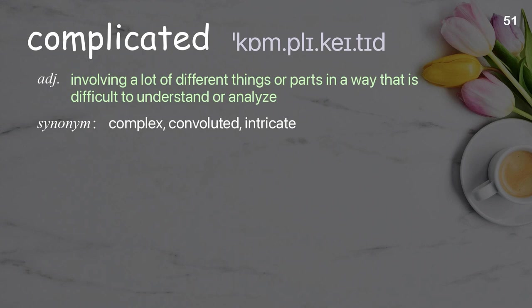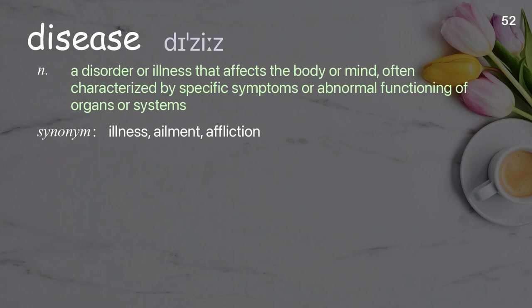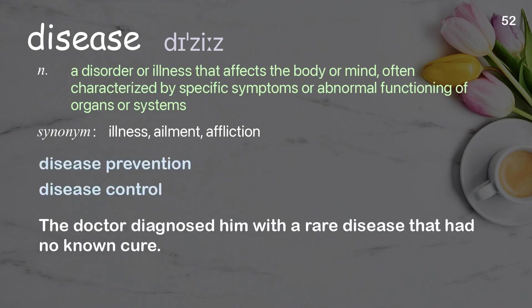Complicated: involving a lot of different things or parts in a way that is difficult to understand or analyze. Examples: a complicated process, become increasingly complicated. He did complicated pen and ink drawings in just a few days. Disease: a disorder or illness that affects the body or mind, often characterized by specific symptoms or abnormal functioning of organs or systems. Examples: disease prevention, disease control. The doctor diagnosed him with a rare disease that had no known cure.